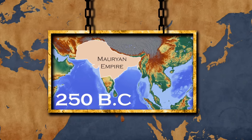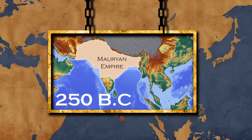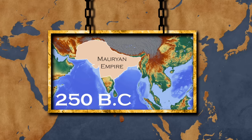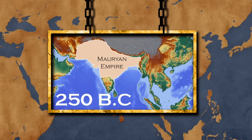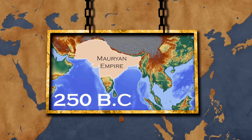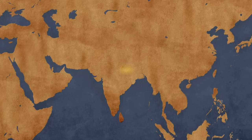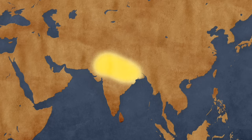Since the fall of the Mauryan Empire, a period of 500 years of domination by provincial powers existed. Local leaders didn't manage to unify the region, but this was until the fourth century.